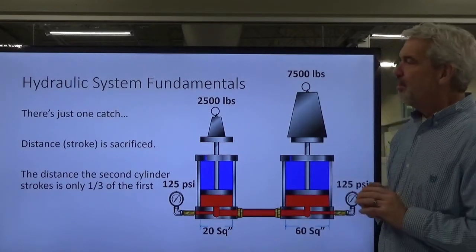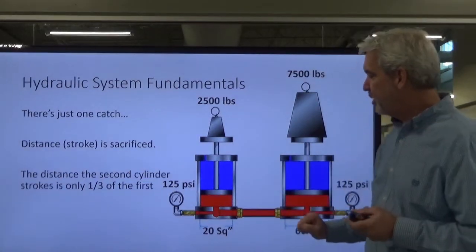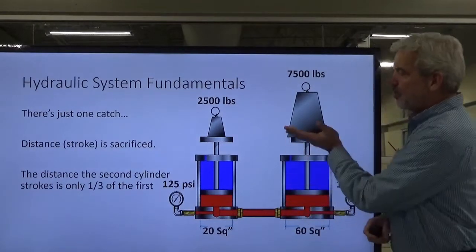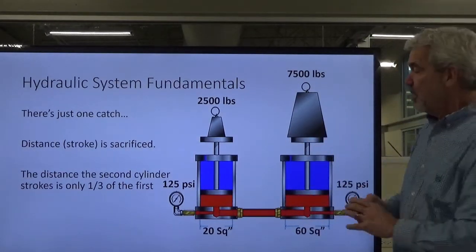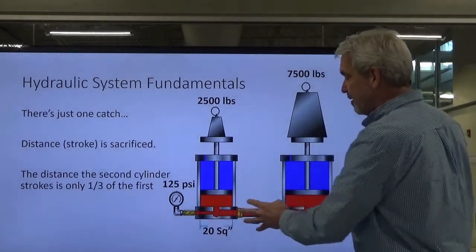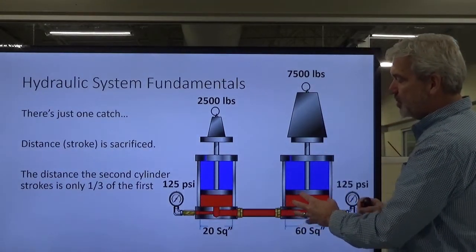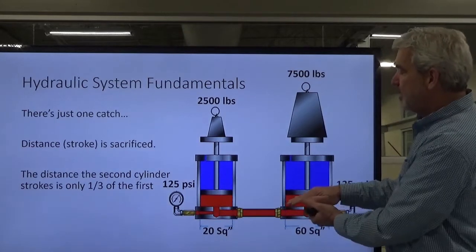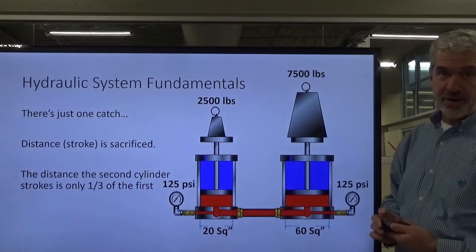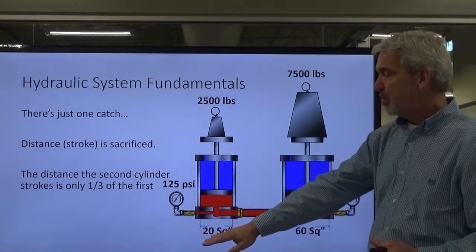So there is one catch. You don't get everything for free. The distance that you stroke this cylinder here is, for example, if we stroke this cylinder 12 inches, you are not going to get a 12 inch stroke on this cylinder because the volume that we figured out last time, the volume and the capacity are different. So our volume, this volume has to be spread out over 60 square inches. So it's not going to stroke the cylinder up as much as this one is coming down. In fact, it will be about one third of that distance.